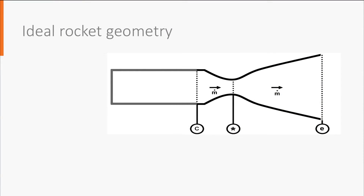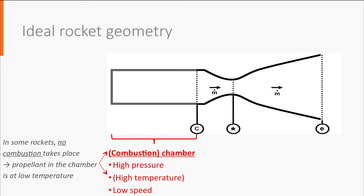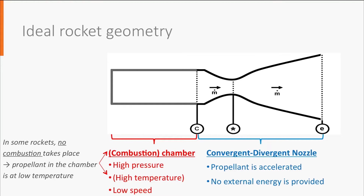Let's first take a look at the ideal geometry that will be used to derive the equations. In this figure, you can observe that we are considering only the final part of the propulsion system, where the heating and expansion process of the propellant takes place. In the combustion chamber, the propellant is normally at high pressure, high temperature and very low speed. Note that the words combustion and high temperature are in brackets, because not in every propulsion concept a combustion takes place or the propellant is heated. The propellant is then accelerated in a convergent-divergent nozzle, where no additional energy is usually provided, and what happens is simply a conversion of the propellant pressure and temperature into kinetic energy.